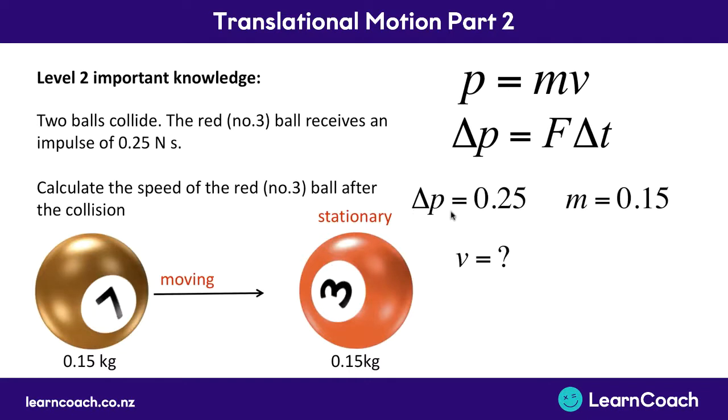So to do that let's write down what we have. We have an impulse, a change in momentum of 0.25. We've got a mass of 0.15 down here. We want to find the velocity, how fast it's going.